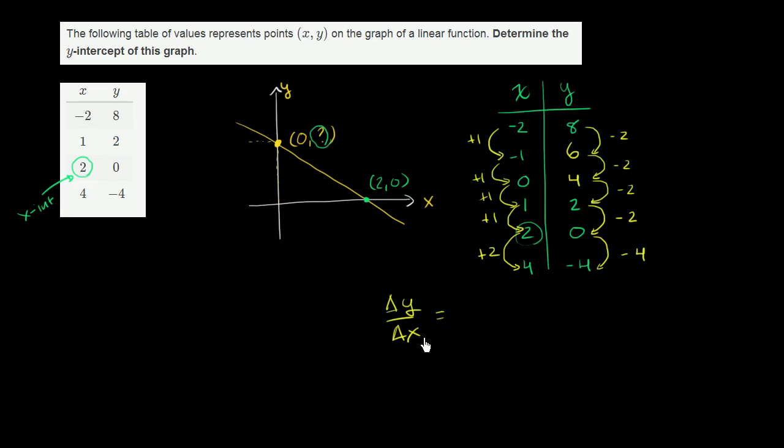And what's constant here is your change in y over your change in x. When x increases by 1, y decreases by 2. When x increases by 2, y decreases by 4. Either way you think about it, your change in y for a unit change in x is going to be equal to negative 2.